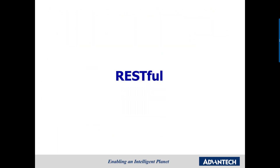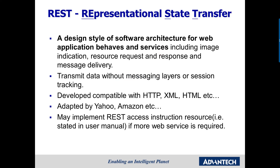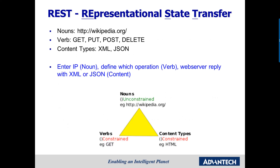Now let's see what REST is for. REST stands for Representational State Transfer. It's a design style of software architecture for how an application behaves and provides service. REST is widely used in nowadays IoT applications. There are three elements in REST: Noun, Verb, and Content. Simply put, you enter a website IP — that's the Noun — and define which operation you are going to do — that's the Verb. Then the web server, which is ADAN, will reply to you with XML or JSON content.